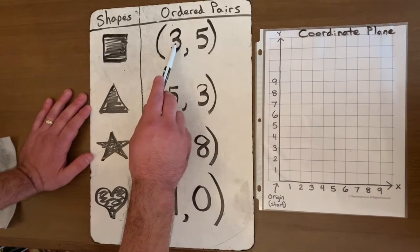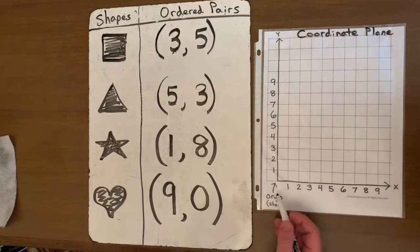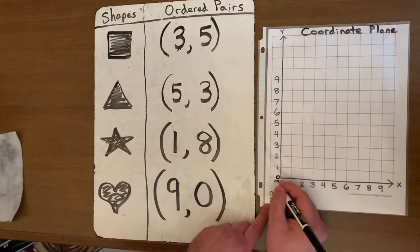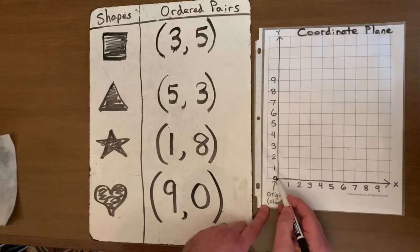In this case we're going to go to the right three places and we're going to go up five. So I'm going to start my marker right here at the origin. Remember the origin is basically zero—zero going right, zero going up and down. So remember for the square I'm going to go to the right three places.